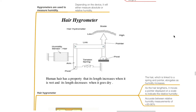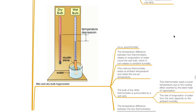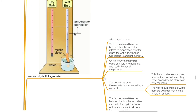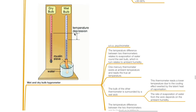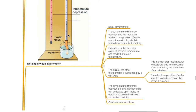The wet and dry bulb hygrometer, also known as the psychrometer: the temperature difference between the two thermometers relates to the evaporation of water around the wet bulb, which in turn relates to ambient humidity. One mercury thermometer exists at ambient temperature and reads the true air temperature. The bulb on the other thermometer is surrounded by a wet wick, which reads a lower temperature due to the cooling effect of the latent heat of vaporization. The rate of evaporation from the wick depends on ambient humidity, and the temperature difference between the two thermometers can be looked up in tables to obtain relative humidity. This is a cumbersome technique.